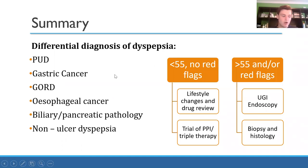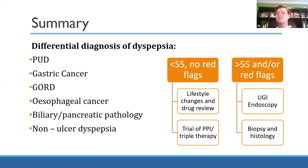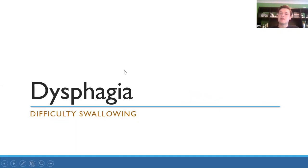This is a quick summary of dyspepsia. We've gone through all the differentials: peptic ulcer, gastric cancer, GORD, esophageal cancer, and biliary issues. Non-ulcer dyspepsia is a diagnosis of exclusion — only made once you've investigated and excluded all the others. For investigations: the key framework is whether the patient is above or below 55, and whether they have red flags.